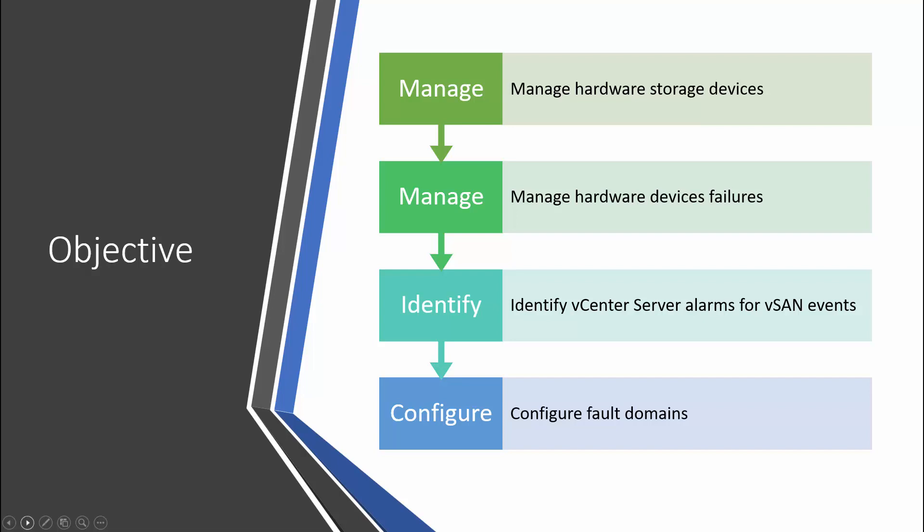Next, how to identify vCenter Server alarms for vSAN events. This is very important because you need to know if there is any failure for the hard disk or any capacity growth. All these things we can see from vCenter Server alarm. And the final objective is how to configure fault domain.